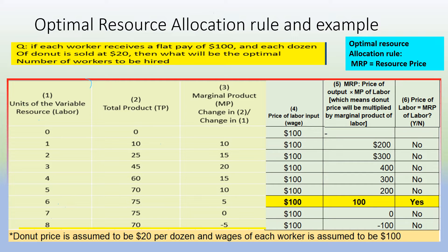Now let's go over all six columns one by one. Column one presents data about the input being employed — workers hired: zero, one, two, three, four, five, six, seven, eight, etc. Column two measures total product, which is the cumulative contribution of the employed resources. So if total product is 25 corresponding to labor unit two, that means two workers together produced 25 dozens of donuts.